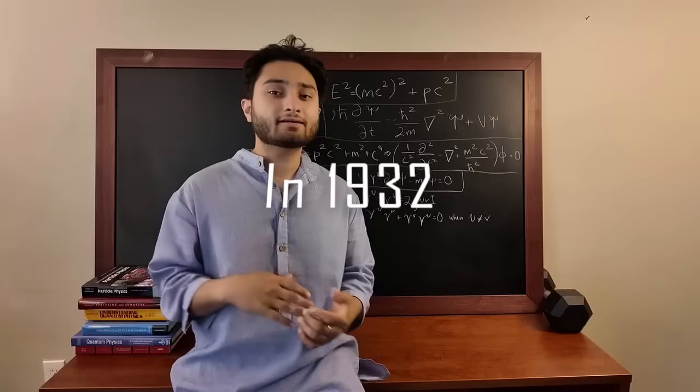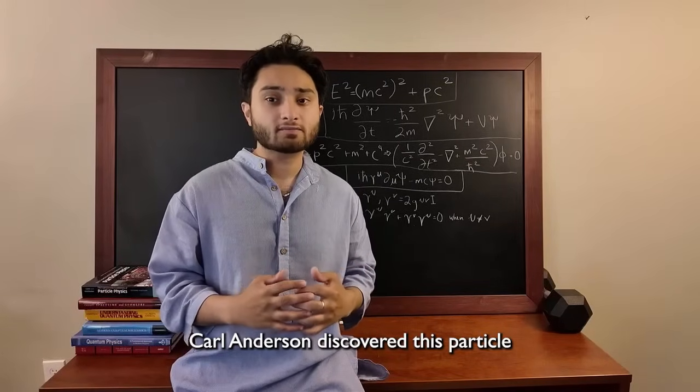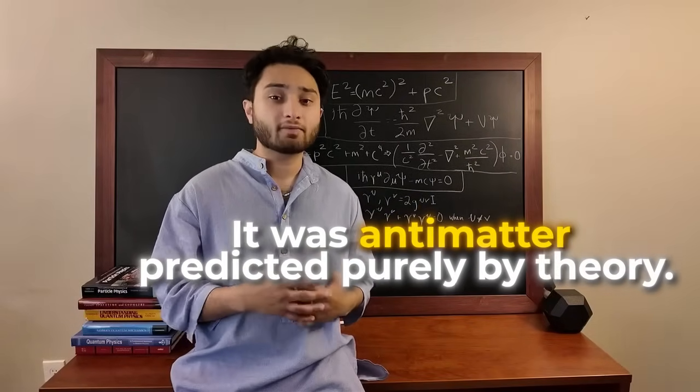the positron. In 1932, Carl Anderson discovered this particle. It was antimatter, predicted purely by theory.